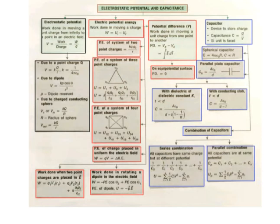On an equipotential surface, the potential difference is zero. Next: capacitors — a device to store charge. Capacitance C equals Q divided by V. The SI unit is the farad. The spherical capacitor: C equals 4 pi epsilon naught R, so C is directly proportional to R. The parallel plate capacitor: C naught equals epsilon naught times A divided by d. With a dielectric of constant k and thickness t less than d: C equals epsilon naught A divided by [d minus t(1 minus 1/k)].